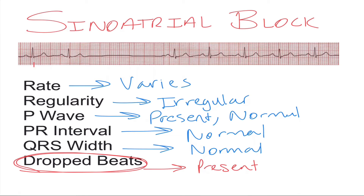Let's take a look at the strip. If we were to march this out and go from QRS spike to QRS spike, we'd get that amount of distance — it's just over three and a half boxes. If we carry that three and a half box distance and march it out to the next QRS, it should line up pretty close.